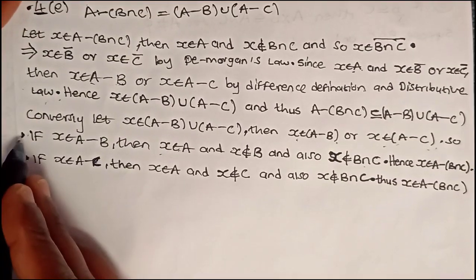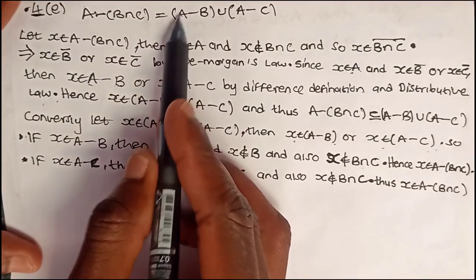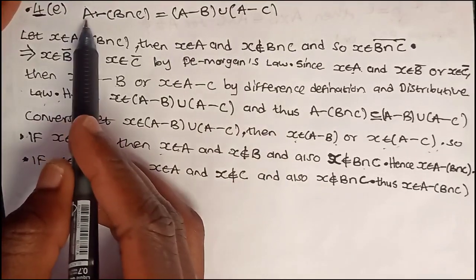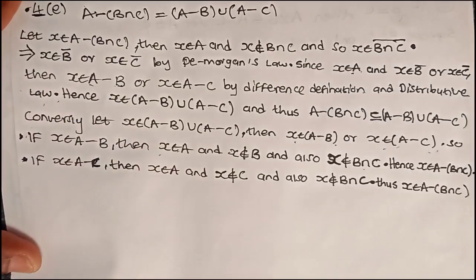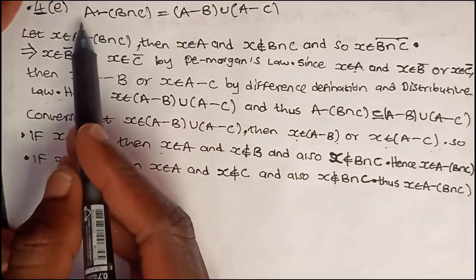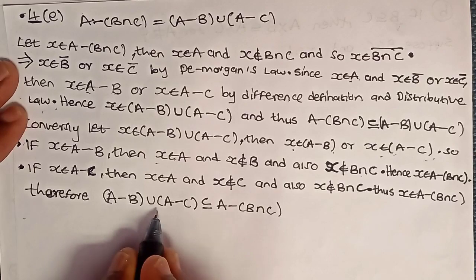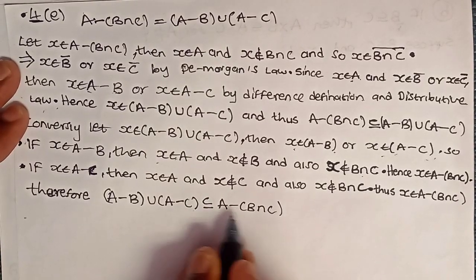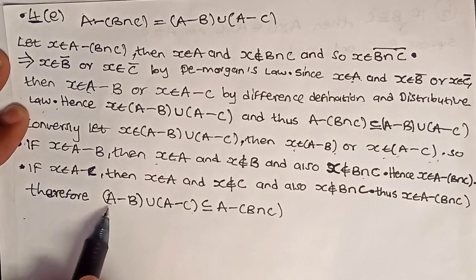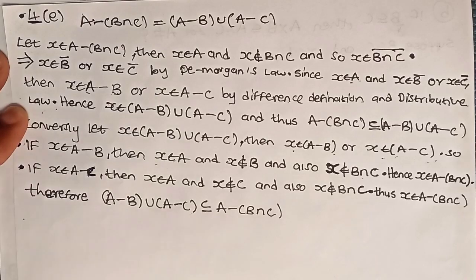So regardless of either of the two cases, if X is in (A minus B) union (A minus C), then X will be in A minus (B intersect C). This proves that (A minus B) union (A minus C) is also a subset of A minus (B intersect C). Therefore, A minus (B intersect C) is a subset of (A minus B) union (A minus C), and hence A minus (B intersect C) is the same as (A minus B) union (A minus C).